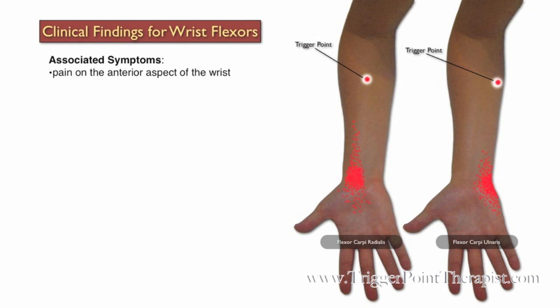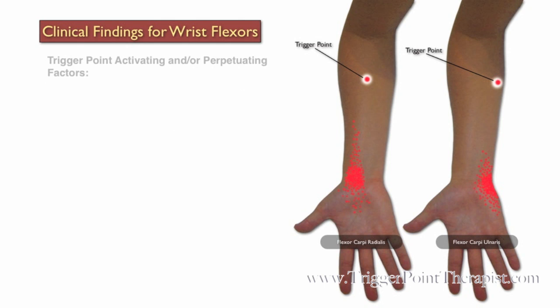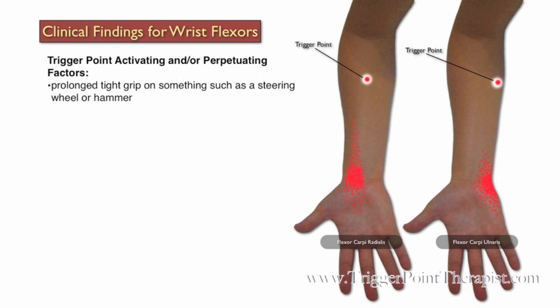Symptoms associated with trigger points in the wrist flexors include pain on the anterior aspect of the wrist, difficulty using scissors as opposed to forearm extensor involvement, and possible entrapment of the ulnar or median nerves, which causes numbness, tingling, and weakness in the hand and the wrist. Activating and perpetuating factors include prolonged tight grip on something such as a steering wheel or a hammer, and pulling weeds.